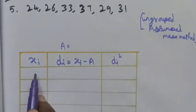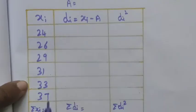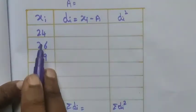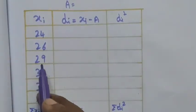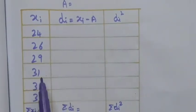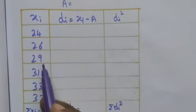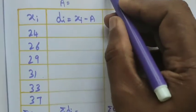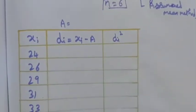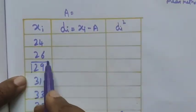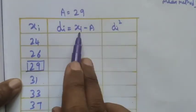First we arrange the given data in ascending order. We can choose any one number as the assumed value — approximately the middle of the data. We have 6 numbers, so n equals 6. I am going to choose 29, so let A equal to 29.